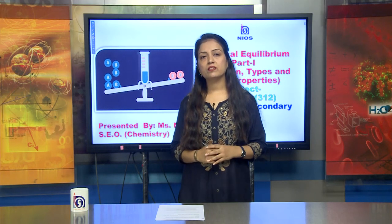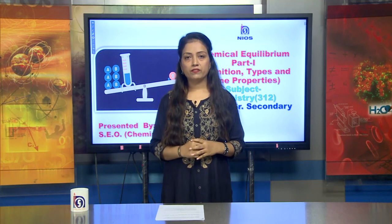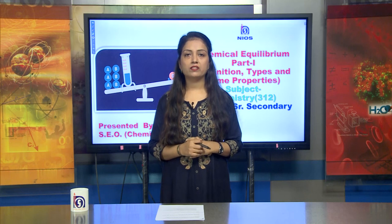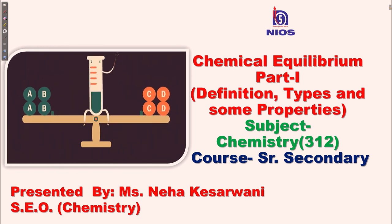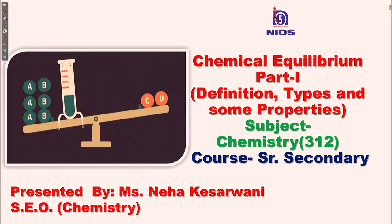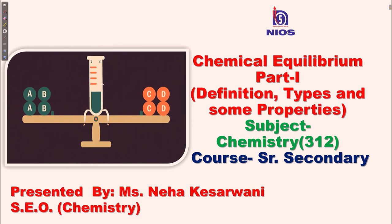Hello, my dear learners, welcome to iOS senior secondary classes. I am Neha Kesharwani, and I am here to present a very important chapter: chemical equilibrium, Part 1. The first question that arises is: what is the meaning of chemical equilibrium? It is the condition in the course of a reversible chemical reaction in which no net change in the amounts of reactants and products occurs.